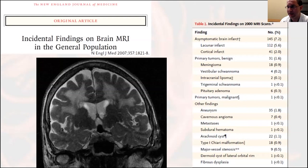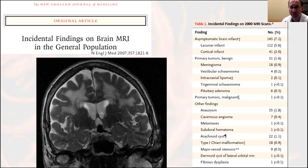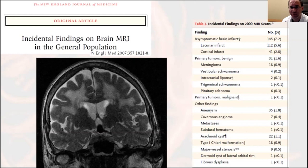Switching to saccular aneurysms — an interesting New England Journal study noted the prevalence of incidental findings on 2,000 MRI scans, finding 1.8% of patients had cerebral aneurysms truly incidentally. The most useful prevalence study was a meta-analysis published in Lancet Neurology — 68 studies with 83 populations — finding an overall prevalence of 3%, which is what I generally cite in clinic.